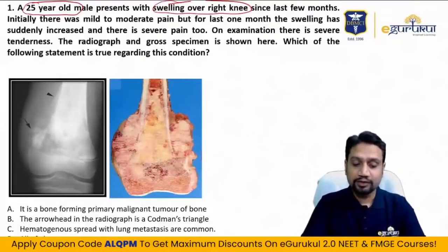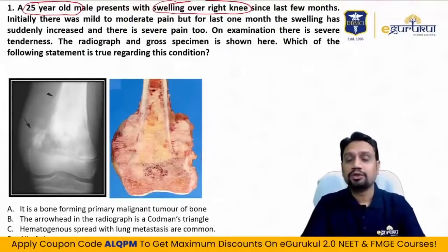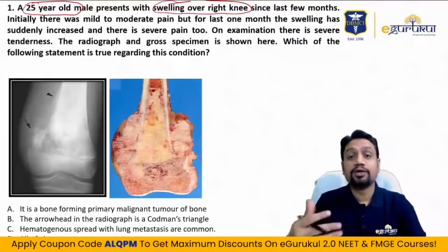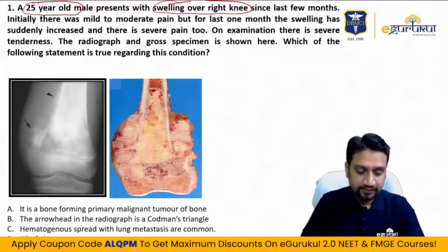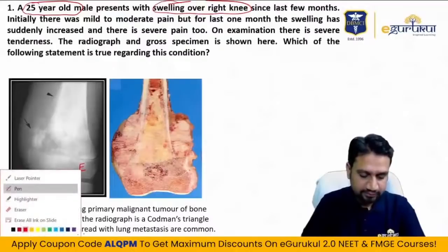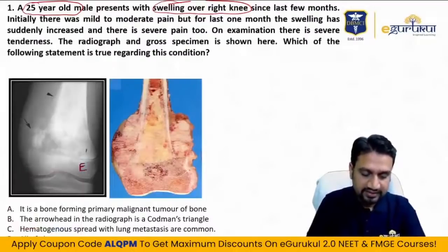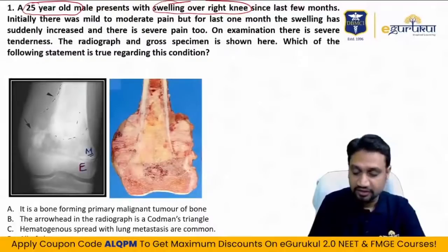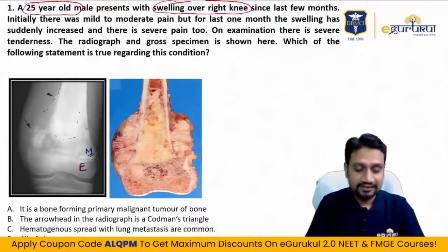On examination there is severe tenderness, quite possible in both conditions. The radiograph and gross specimen are shown. Looking at the X-ray, the epiphyseal area seems clean while the metaphyseal area shows increased density inside the bone, gross destruction of the cortex, and elevation of the periosteal region.